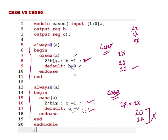So what we learned here is: if something is written inside the case (regular), it is a pure 100% match — 1x means 1x only, 1z means 1z only. But here in casex, this x can be 0, 1, x, or z. This is how case and casex differ.